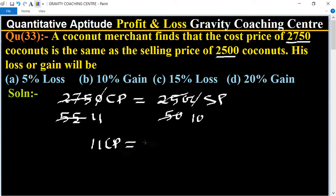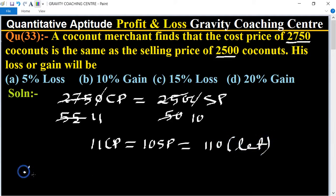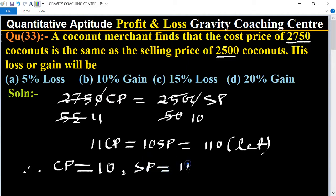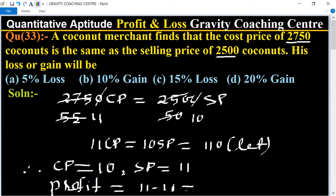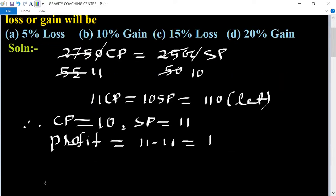So 11 CP equals 10 SP. Suppose the price is such that CP equals 10 and SP equals 11. Since SP is greater than CP, there is a profit. Profit equals SP minus CP, which is 11 minus 10, equal to 1.